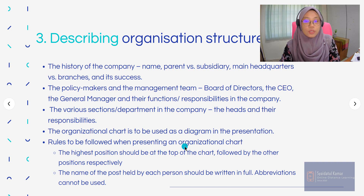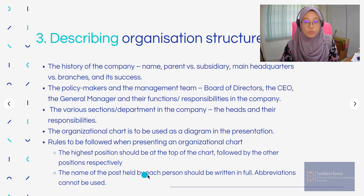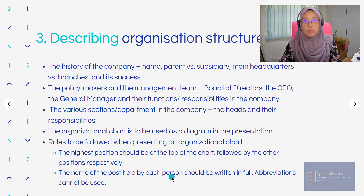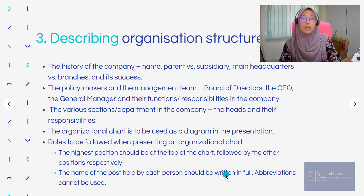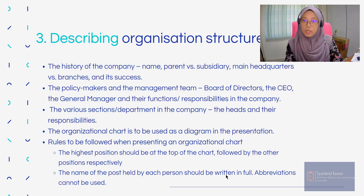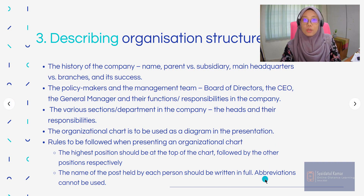While presenting the organisational chart, follow these rules: the highest position should be at the top of the chart, followed by the other positions respectively. The name of the post held by each person should be written in full — abbreviations cannot be used. So if someone is the CEO, write out what CEO stands for. The post held must be written in full, because we are learning about the types of positions held by these people in the company. You cannot use short forms; everything has to be fully written.